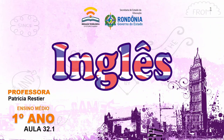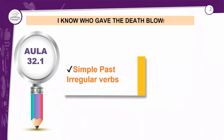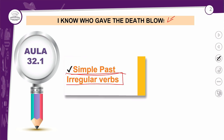Aula 32.1. Nessa aula as coisas vão ficar um pouquinho mais difíceis. Temos aí: Simple Past, Irregular Verbs, verbos irregulares. O título tem tudo a ver com a aula porque a gente vai ter um thriller — um suspense — envolvendo essa aula. I know who gave the death blow. Eu sei quem deu o golpe mortal — tirou a vida — porque é um suspense de assassinato aqui na nossa aula de hoje.